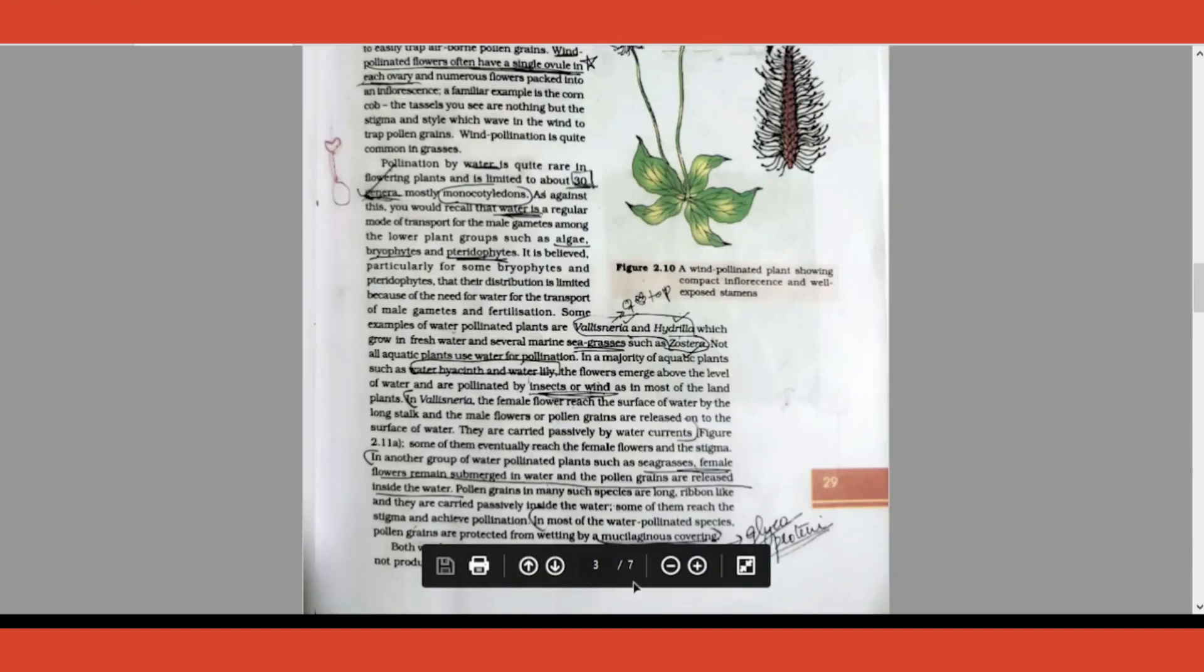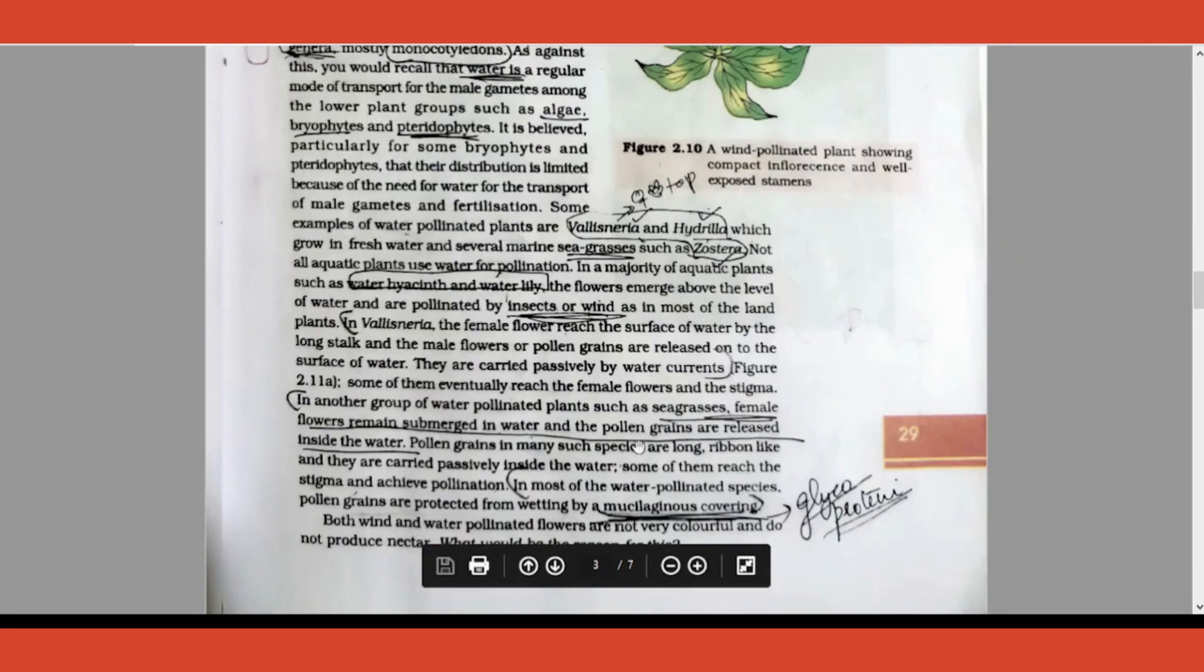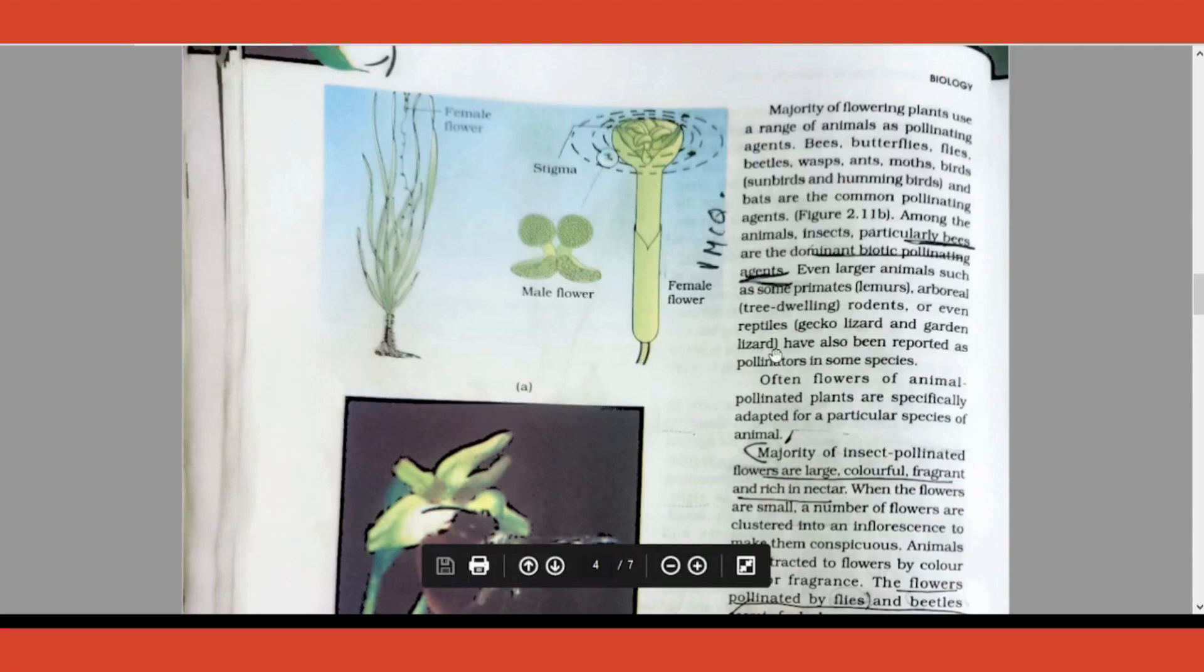What is special about water pollinated species? What is special about their pollen? Underline that there is a mucilage covering, which is basically a glycoprotein, which is covering the pollen grain. What is the purpose? To protect it from getting wetted.